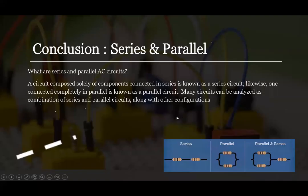Conclusion. So, what are series and parallel AC circuits? A circuit composed solely of components connected in series is known as a series circuit. Likewise, one with components completely in parallel is known as a parallel circuit. Many circuits can be analyzed as a combination of series and parallel circuits, along with other configurations.